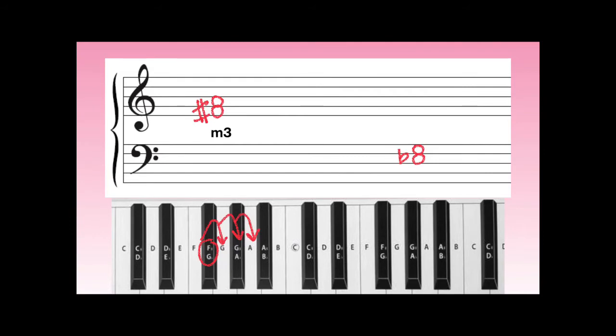Now let's count from an E-flat to a G natural: one, two, three, four half-steps — that means it's a major third.